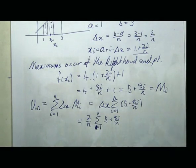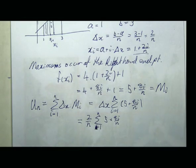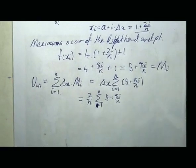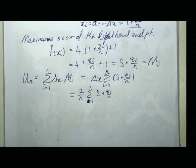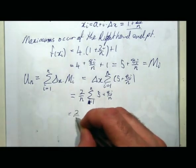Pretty much the reason you did summation notation — one reason is to do this, and the other is because it crops up in a whole lot of other places. Using the rules of summation, I can split the sum: sum of (5 + 8i/n) equals the sum of 5 plus the sum of 8i/n. The constant 8/n can be brought outside the summation.